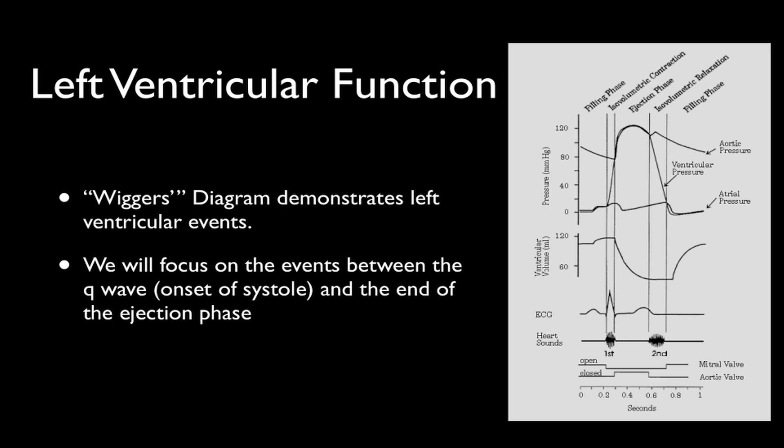The Wiggers' diagram at right demonstrates left ventricular events. We will be focusing on the events between the Q wave, which is the onset of systole, and the end of the ejection phase.